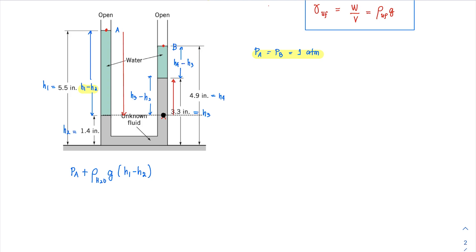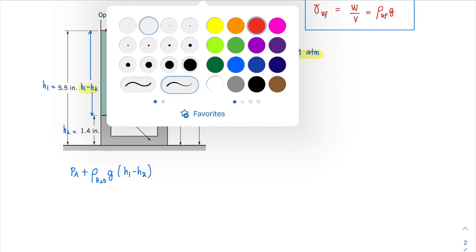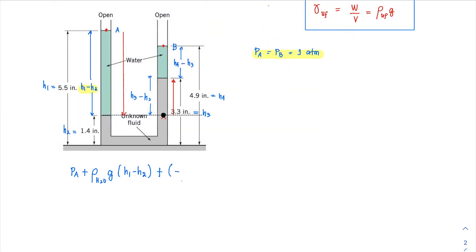Moving upward through the unknown fluid, I add a negative term — negative density of unknown fluid times g times (h3 minus h2) — because pressure decreases as we go up. Then continuing upward from that boundary to the water surface, moving across water, I add another negative term: negative density of water times g times (h4 minus h3).